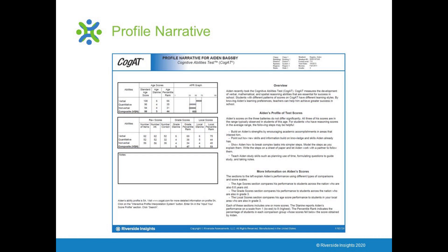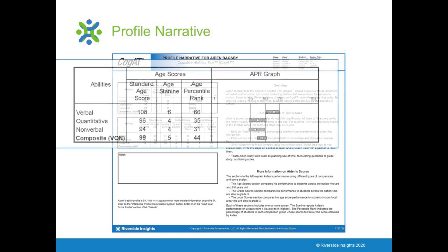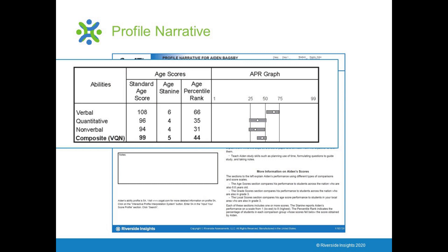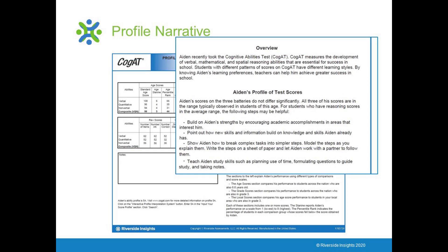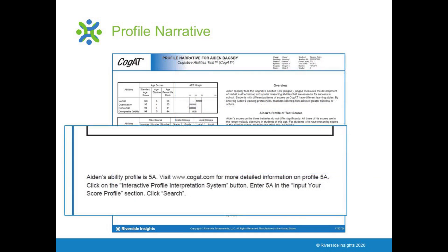You may have received a score report for your student that looks like this. The profile narrative provides several pieces of information. First, there are norm-referenced scores. The age percentile rank is the easiest to understand. It tells you how well a student performed compared to a national sample of students who are the same age. It reflects the percent of students who scored at or below this student's score. In this case, Aiden scored above about 66 percent of students on the verbal battery. He scored above 44 percent of students on the composite score, which combines the three domains. On the right is a description of this student's score pattern and some pointers on how this student may learn best.